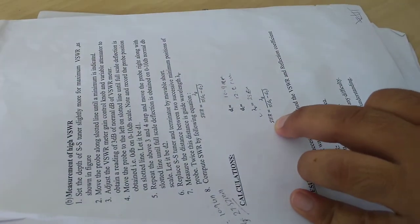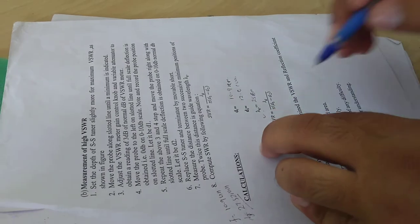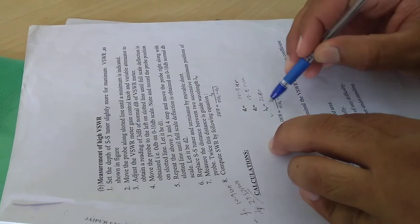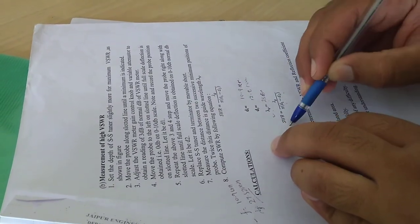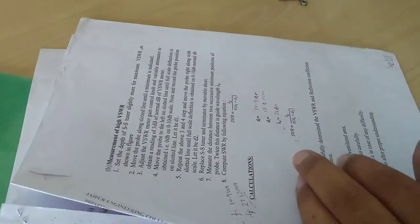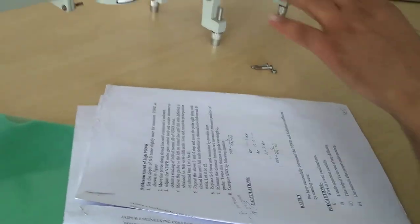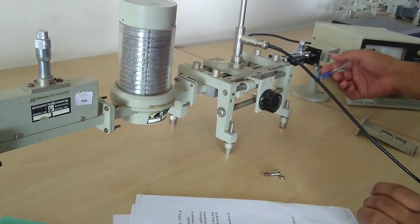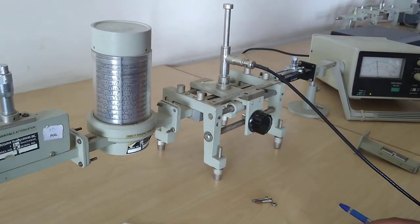By putting the value of lambda g, d1, and d2 in this formula, I calculate the VHWR of this particular device as an SS tuner. Thank you.